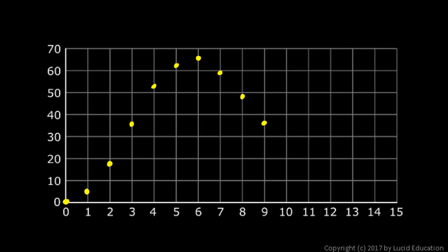At 9 seconds it was 36.5; at 10 seconds it was 26.5; at 11 seconds it was 19, just under the 20 mark; at 12 seconds it was 12.5; at 13 seconds it was 7.5; at 14 seconds it was 3.5; and at 15 seconds it was 0. You could connect those dots with a smooth curve, but you don't have to — these data points represent the information we were given.